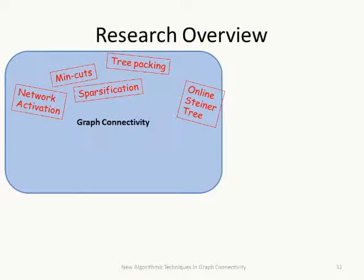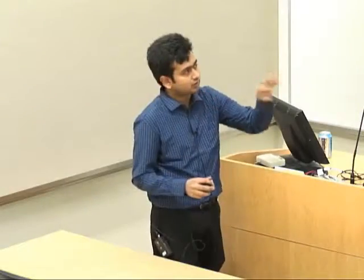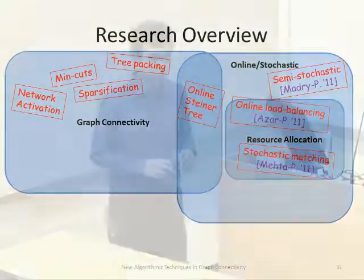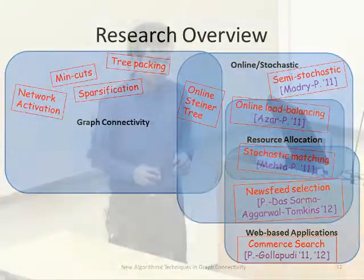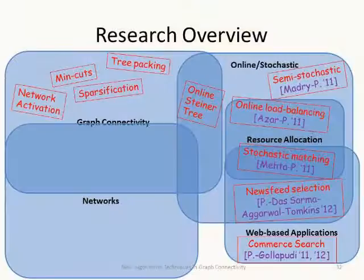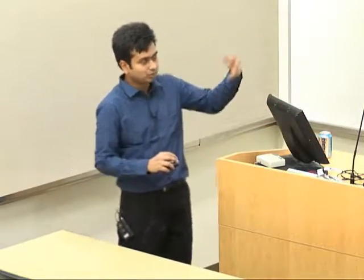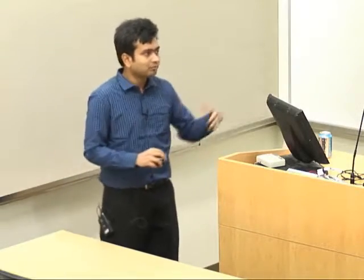In summary, my research spans several areas: graph connectivity (min-cuts, Steiner trees, sparsification), online and stochastic optimization problems, resource allocation (load balancing, matching), applied problems such as news feed selection in social networks, search algorithms, and networking algorithms for long-distance Wi-Fi, adaptive channel networks, and P2P monitoring. Some areas are theoretical, others more applied, but all involve algorithmic approaches to specific systems.